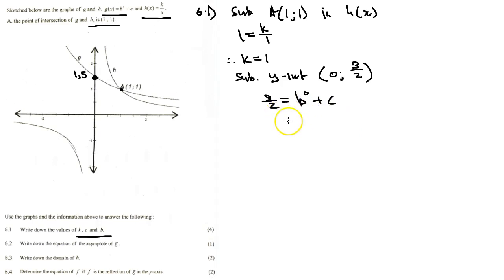3/2 equals b to the 0 which is 1 plus c, therefore c equals 3/2 minus 1, which equals 1/2. So c is equal to 1/2.